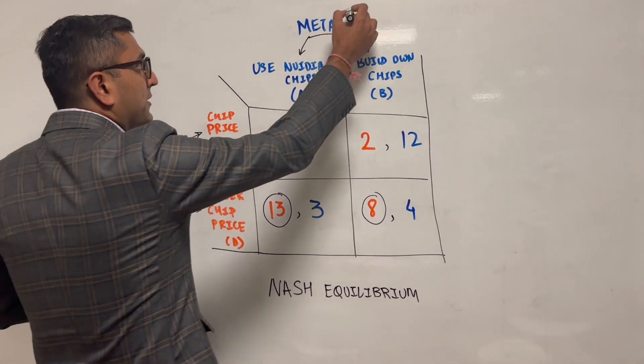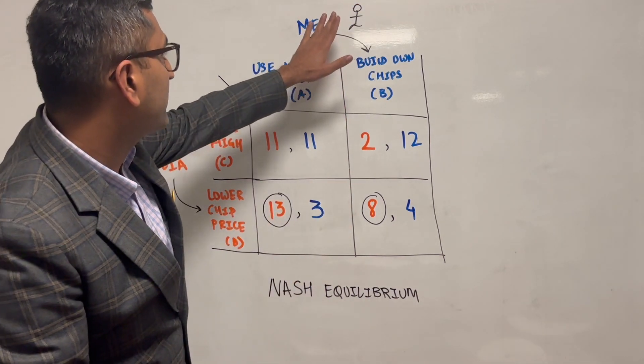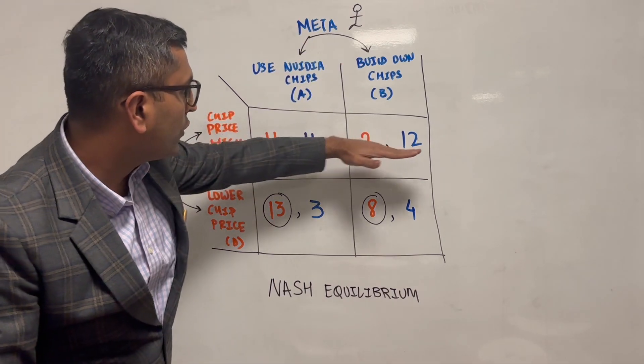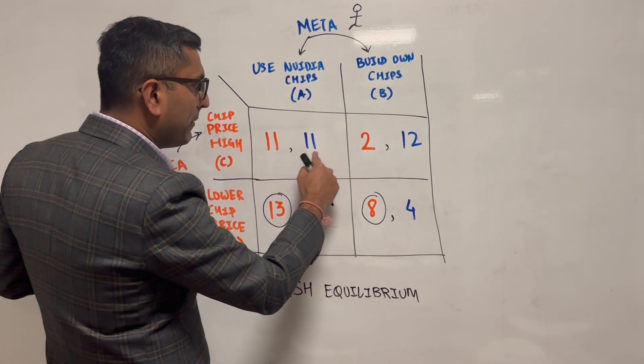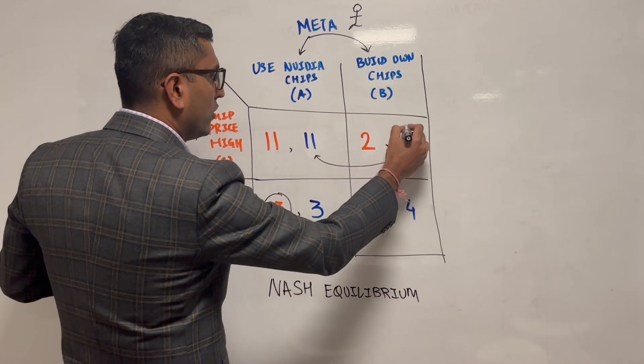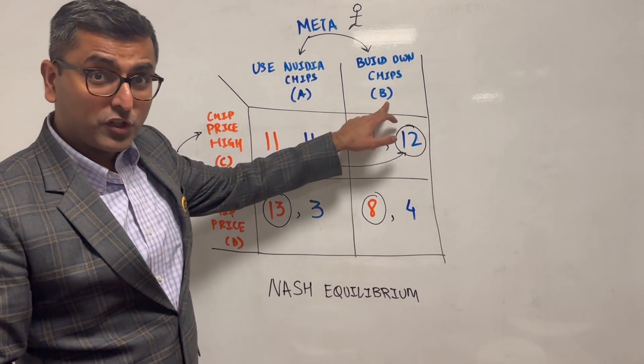Same thing. So now the perspective is of the Meta leadership. The Meta leadership is going to decide, and they're going to then assume, okay, assume Nvidia goes with choice C. If Nvidia goes with choice C, they're going to compare their payoffs. They're going to say, oh, 11 versus 12, I'm going to go with better payoff. So they will decide they'll go with choice B.